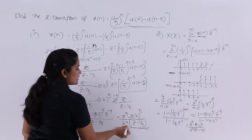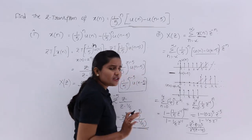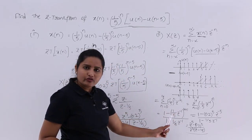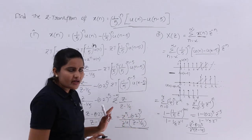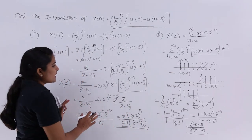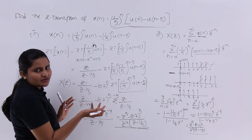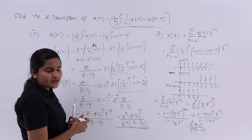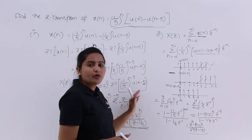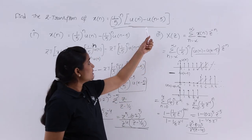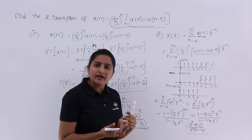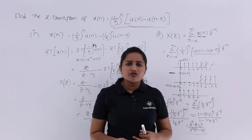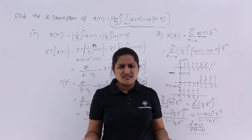So we have two ways to solve this problem. If you know the geometric series summation formula, you can use the second method directly. Otherwise, you can use the general Z transform formula for a^n · u(n) and apply the time shifting property. Either way, you will get the same solution.